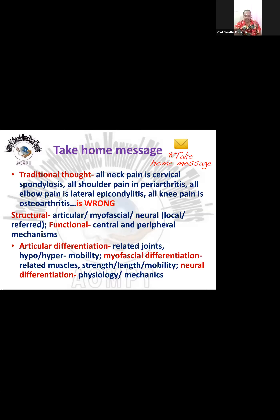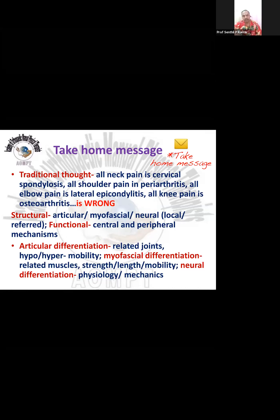Articular differentiation involves identifying which joints in the region can refer pain there. For the shoulder, differentiate among the four joints: scapulothoracic, acromioclavicular, sternoclavicular, and glenohumeral. Myofascial differentiation involves differentiating between synergists, agonists, and antagonists for their strength — whether underactive or overactive — their length, whether shortened or lengthened, and mobility, which is the myofascial play.